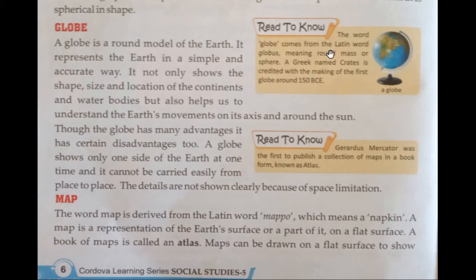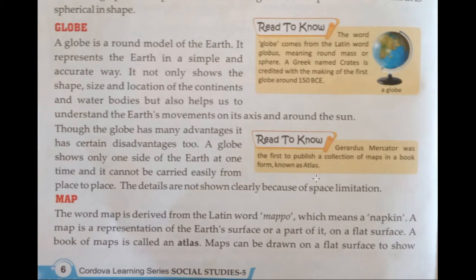The word globe comes from the Latin word 'globus', meaning round mass or sphere. A Greek named Kretis is credited with making the first globe around 150 BCE. Girardus Mercator was the first to publish a collection of maps in a book known as an Atlas.